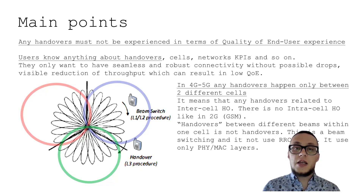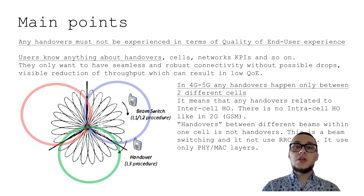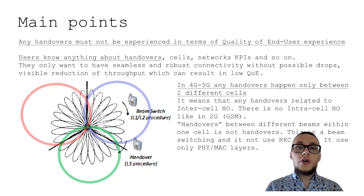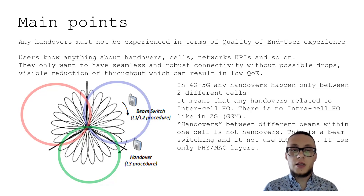Beam switching is always about the physical and MAC layer, whereas a handover is more about the logical layer — more about RRC connection signaling. We should also know about that distinction.